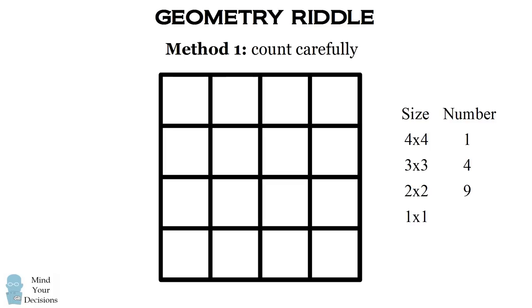Finally we count the number of 1 by 1 squares. There are 4 different squares in a row. And we're going to have 4 different rows that we can do this. So there will be 4 times 4, which equals 16 1 by 1 squares.